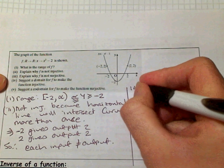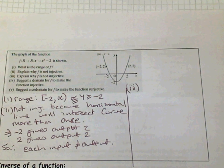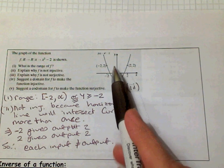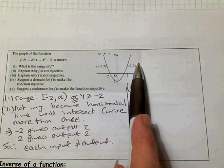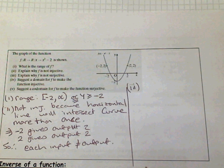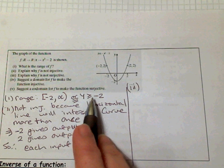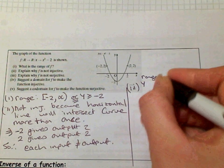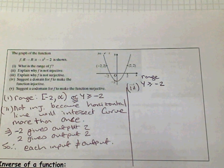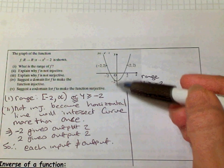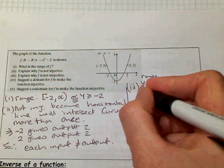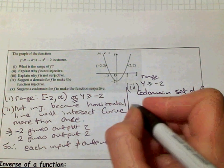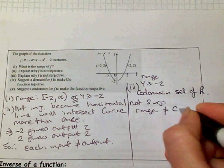Part three: explain why F is not surjective. Remember the condition for surjective was that the horizontal line intersects at least once — and it does — but be careful not to fall into that trap. The major condition is that the range must equal the co-domain. The range is values greater than or equal to minus two, but the co-domain is the set of real numbers — any Y values. Therefore the reason it's not surjective is because the range does not equal the co-domain.